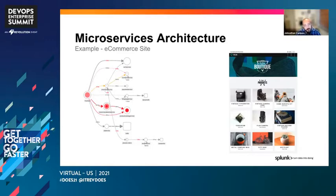So if we factor in that we may have an issue with respect to one of these services — where is this issue located? Where can we find this issue? We're not necessarily clear on where we could find it. This is where observability can really help us find that needle in the haystack.